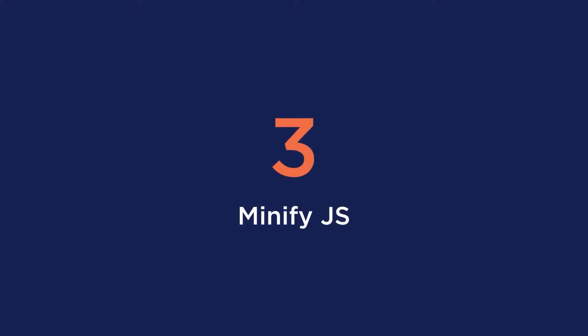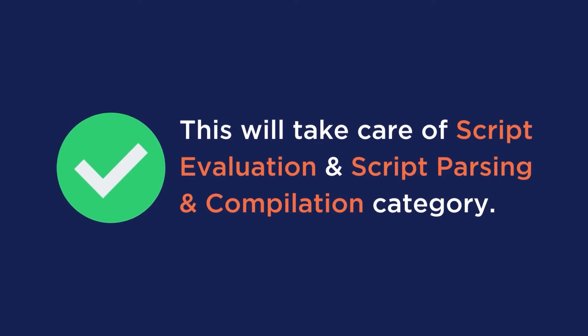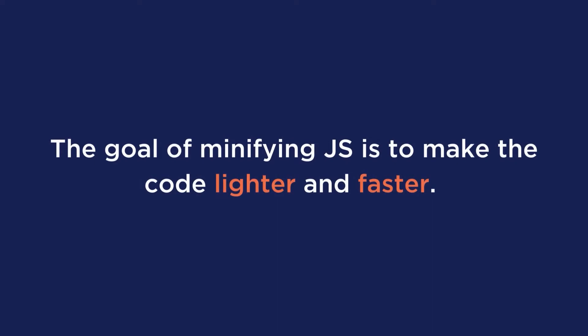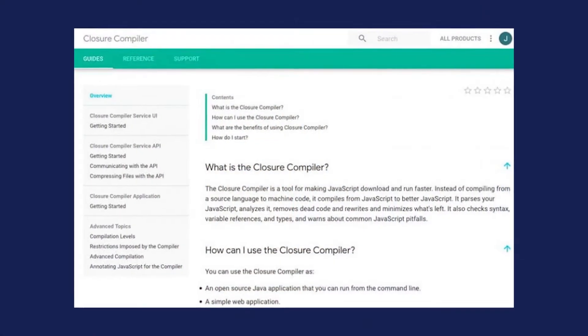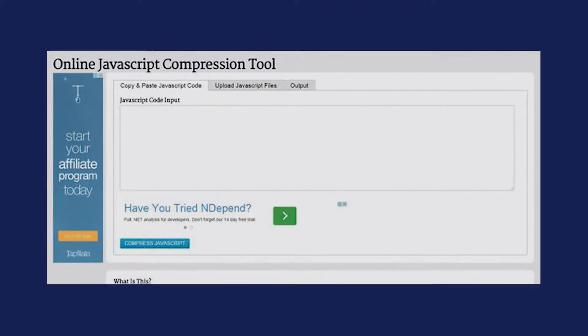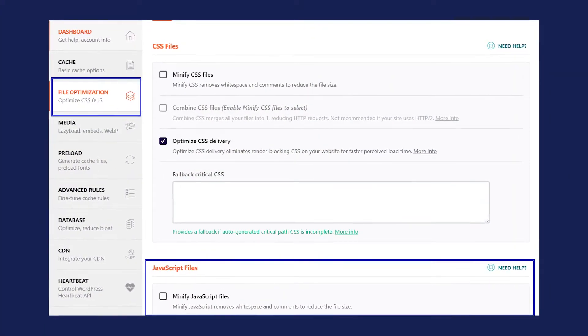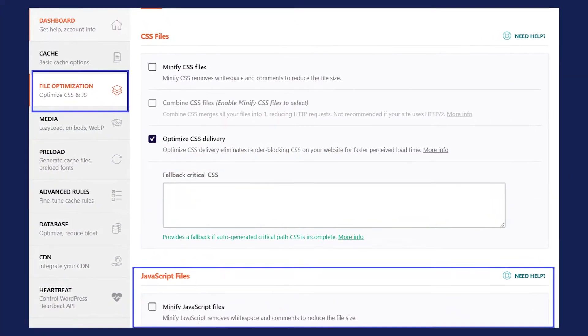Third is to minify JavaScript. The goal of minifying JavaScript is to make the code lighter and faster. You'll reduce the JavaScript file size by removing line breaks, comments, and white spaces. There are some JS minification tools out there like Closure Compiler, UglifyJS2, and JS Compress. But the easiest way to do this if you have no technical knowledge is just to let WP Rocket do it for you in just a few clicks.